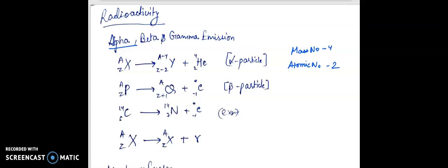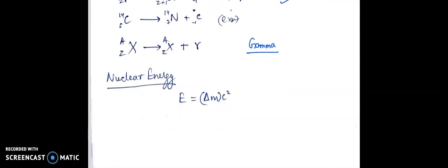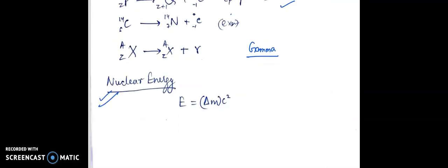Then for gamma particles, there is no change in the atomic number or mass number. The last topic is nuclear energy: E is equal to delta m·c squared.